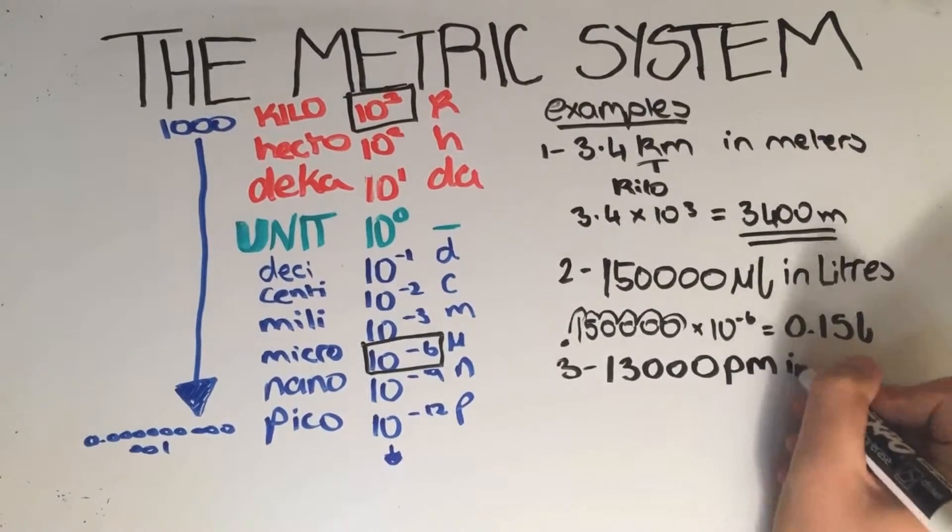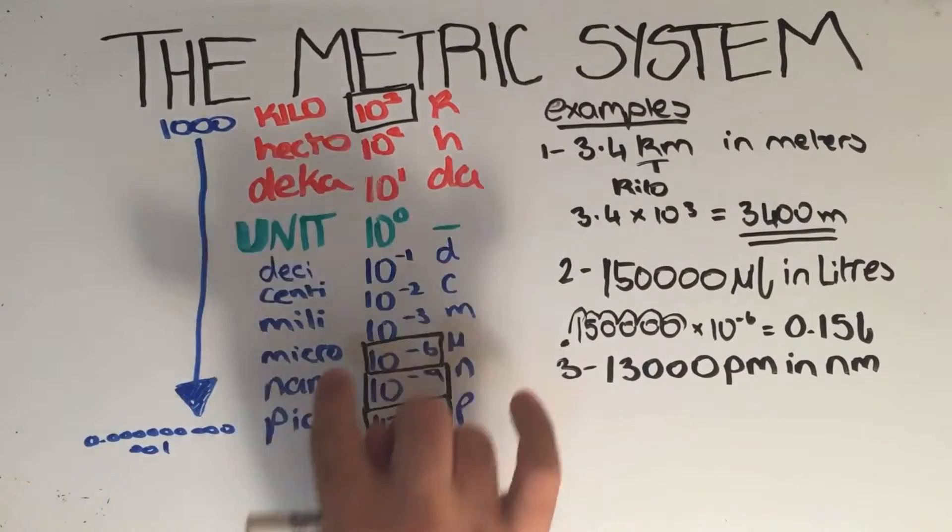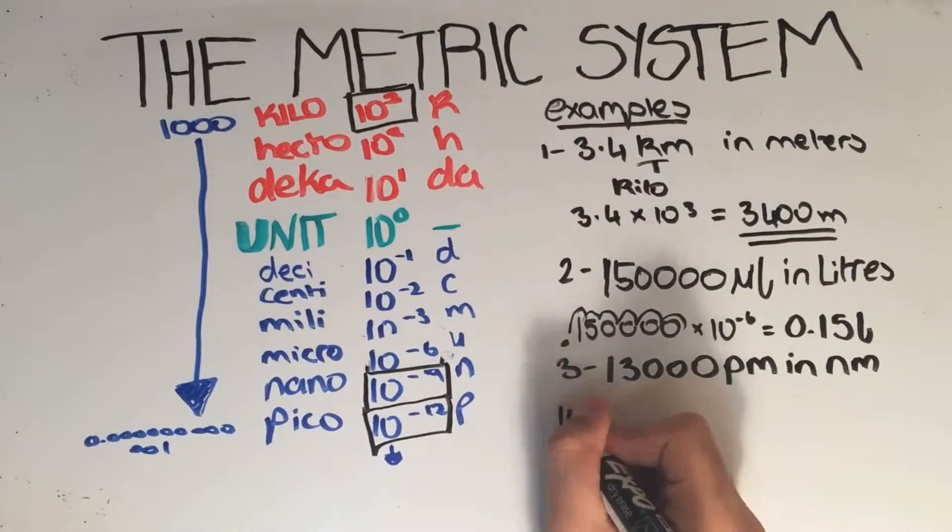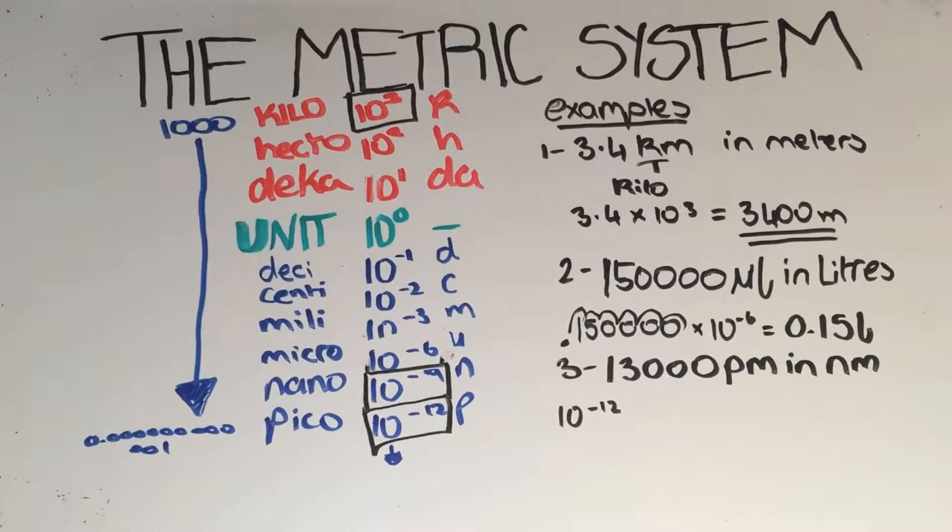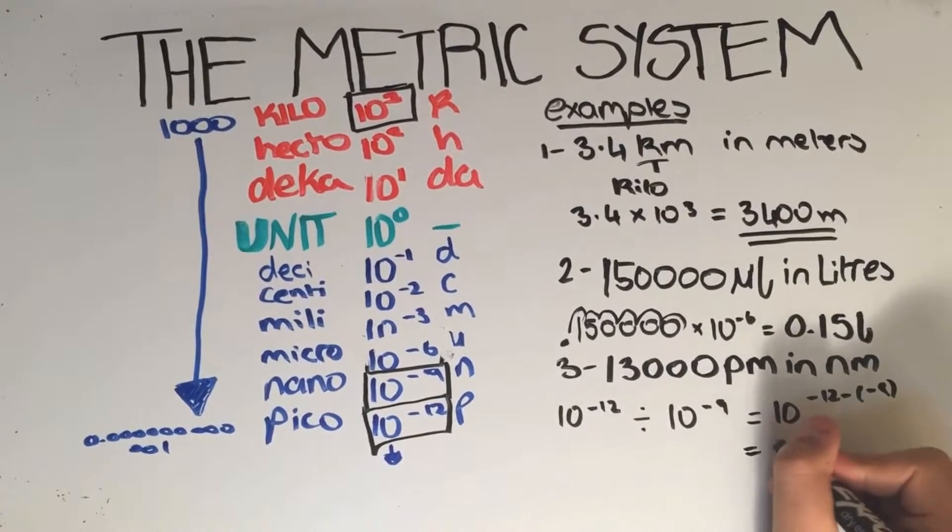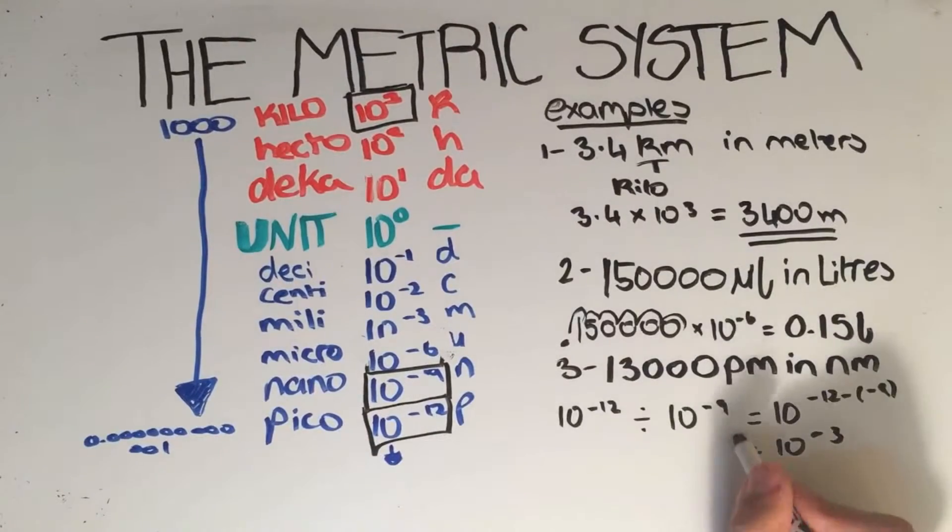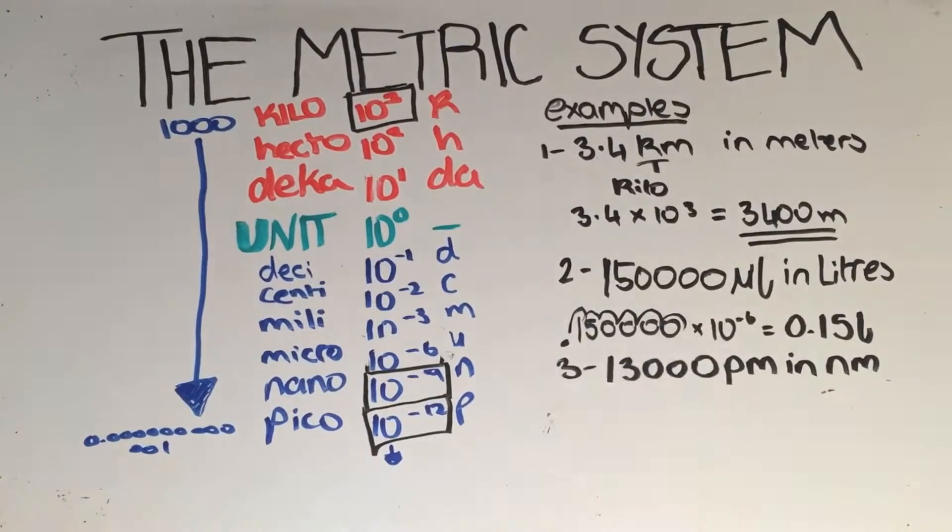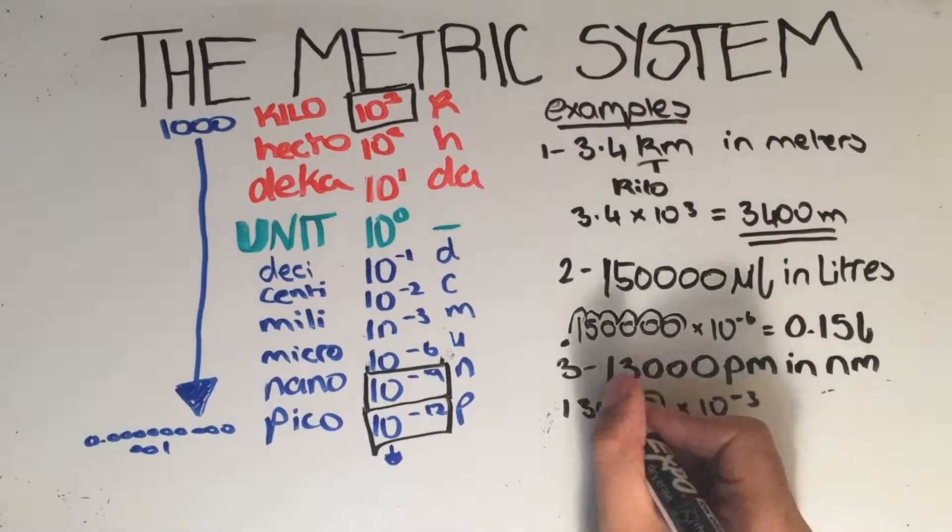In the third example, we must convert 13,000 picometers into nanometers. Pico is 10 to the negative 12, and nano is 10 to the negative 9. So the first step is to divide them, or in simple terms, subtract negative 12 by negative 9. In the end, you would get 10 to the power of negative 3. So you multiply 10 to the power of negative 3 by 13,000 to get 13 nanometers.